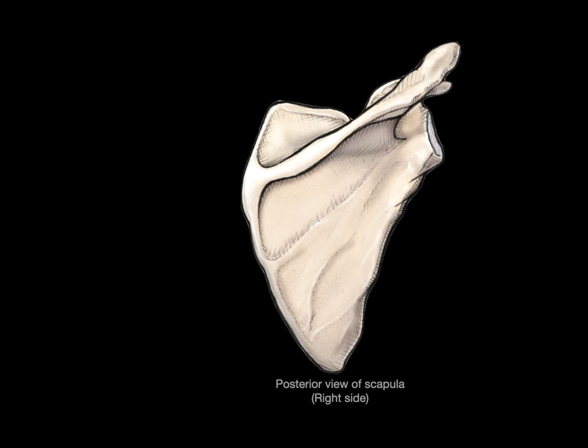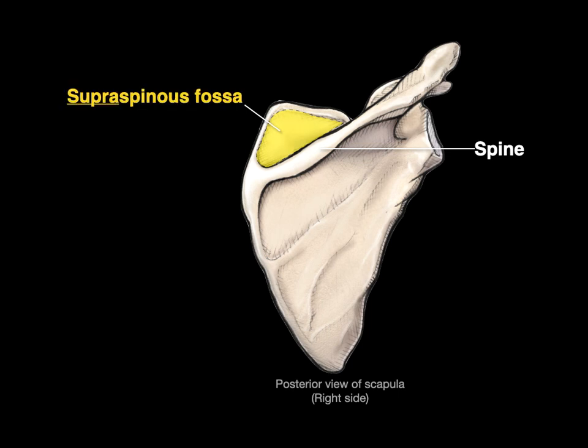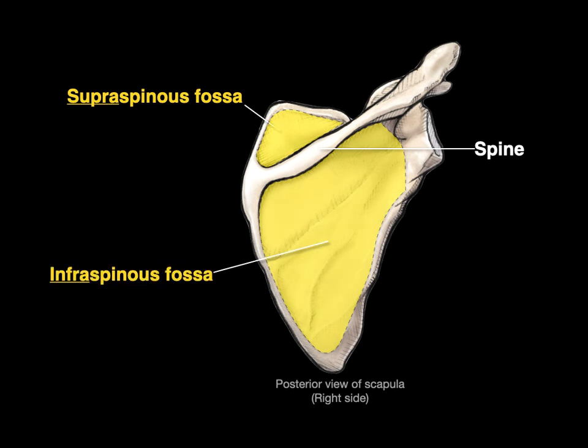Here's a posterior view of the scapula on the right side. Anatomists call this the spine because it's this bony ridge. What do we call this shallow fossa above the spine? Why don't we call it the fossa above the spine — the supraspinous fossa. And what do we call this one below it? We call it the infraspinous fossa.